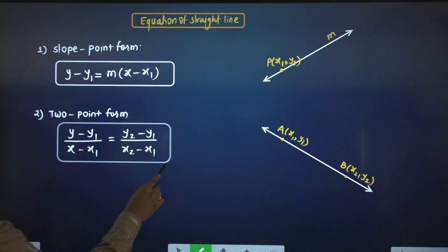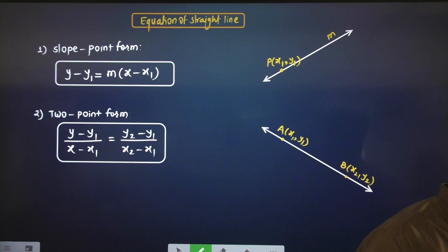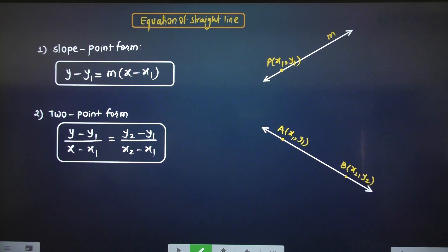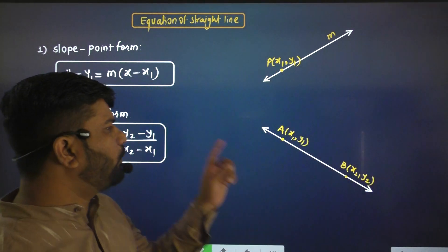In the two-point form, y minus y1 upon x minus x1 equals y2 minus y1 upon x2 minus x1, where x1, y1, x2, y2 are the points on the line. When a line and 2 points are given, we use the two-point form to find the equation of the line.